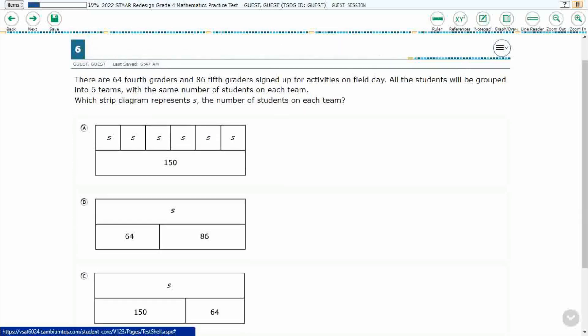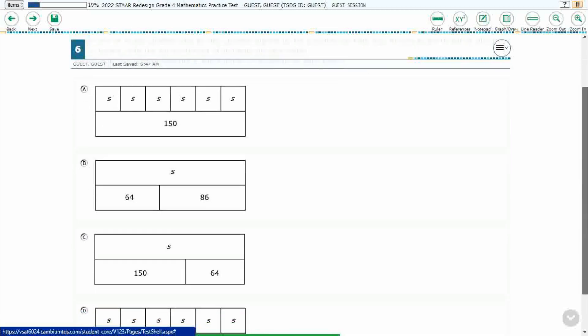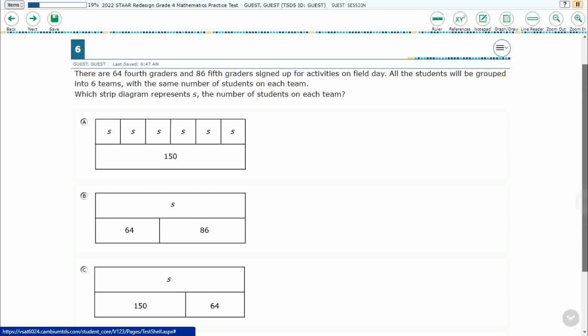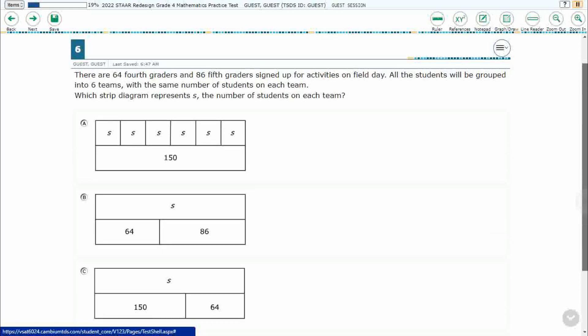So we've got 64 fourth graders, 86 fifth graders signed up for activities on a field day. All the students will be grouped into six teams with the same number of students on each team. So we need a strip diagram that represents S as the number of students on each team.